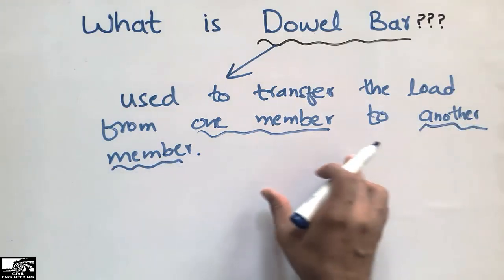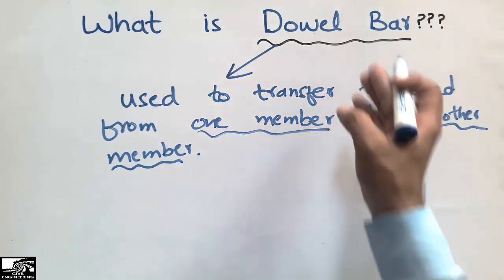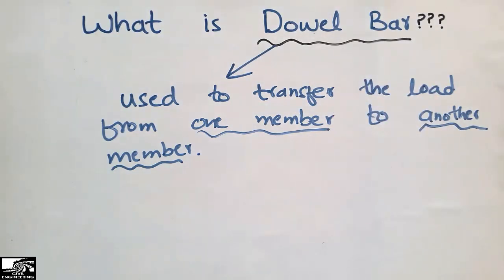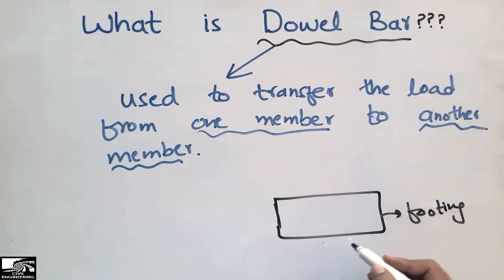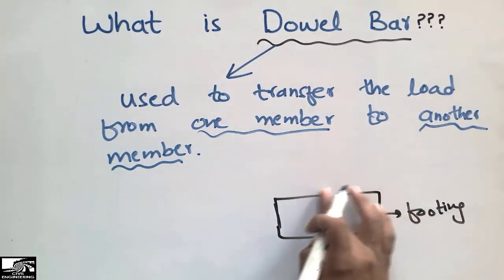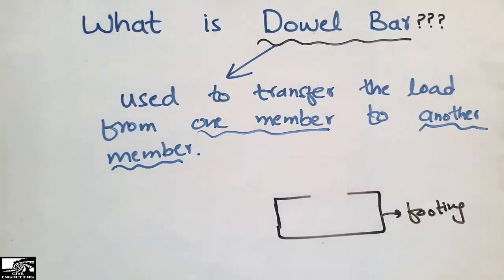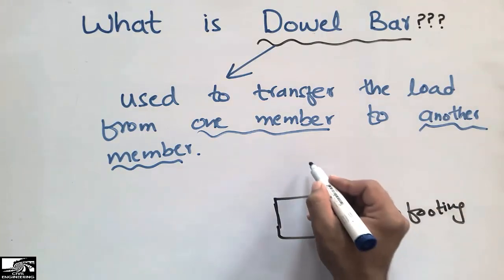This is the main difference between other types of bars and the dowel bar. For example, if I consider that this is any type of footing - it may be the isolated footing or the compound footing - and we have any column that arises from this footing, we can show it here.